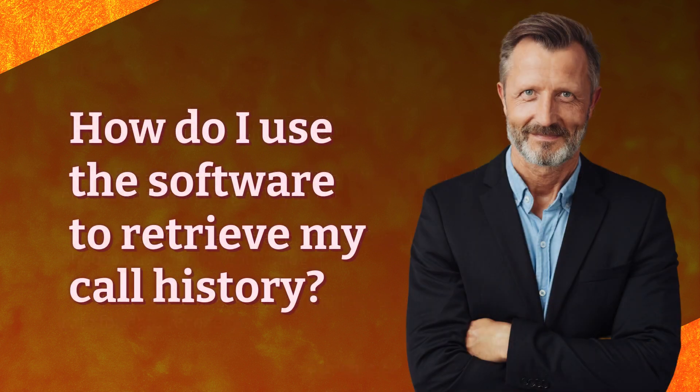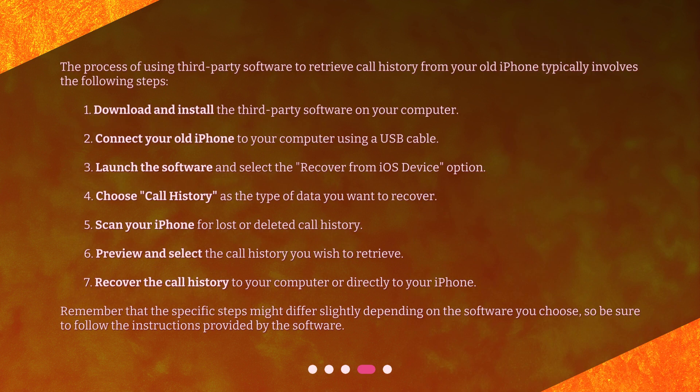How do I use the software to retrieve my call history? The process of using third-party software to retrieve call history from your old iPhone typically involves the following steps: 1. Download and install the third-party software on your computer. 2. Connect your old iPhone to your computer using a USB cable. 3. Launch the software and select the 'Recover from iOS device' option.